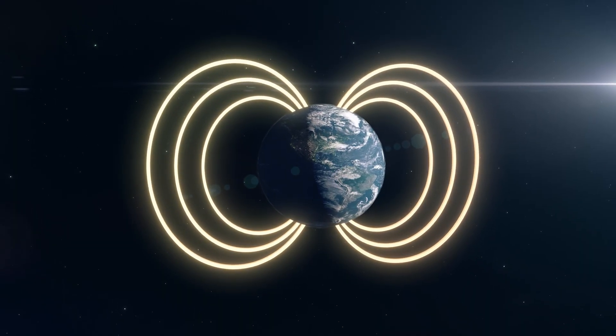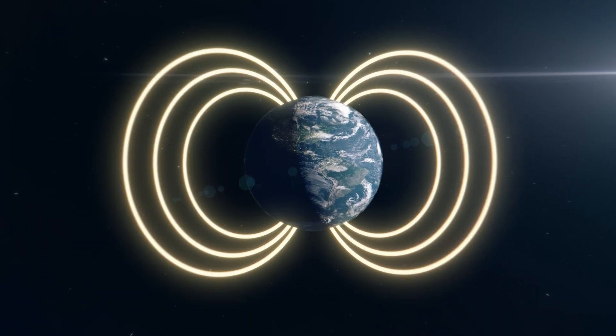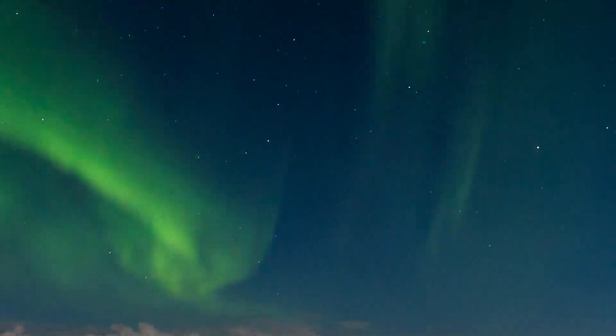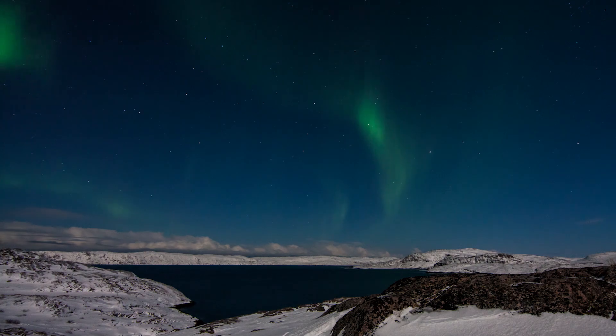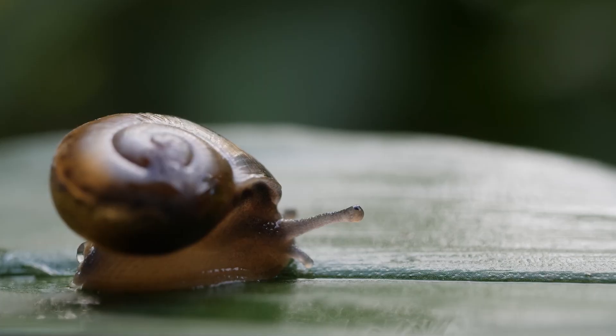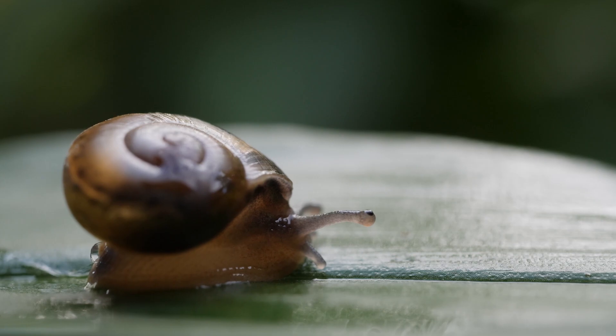Without its magnetic field, life on Earth would be impossible, or at least a shadow of what we know. The Earth's magnetic field protects its atmosphere and surface from the solar wind and significantly impacts the evolution of life on Earth.